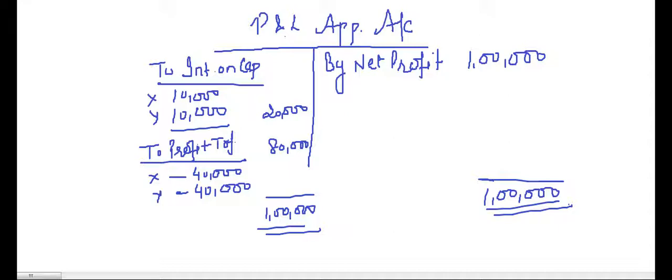The profit is transferred to the partners' capital account or the partners' current account. The net profit from P&L account is transferred to the credit side of the P&L Appropriation Account, because it is an income. Interest on capital is an expense for the firm, so it is written on the debit side, and the remaining profits are transferred to the partners' capital or current account.